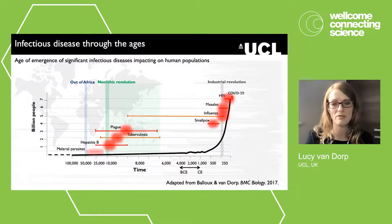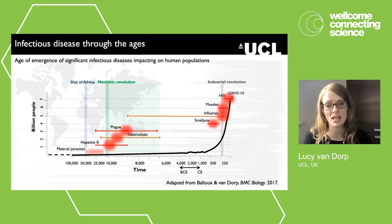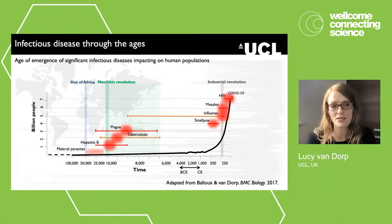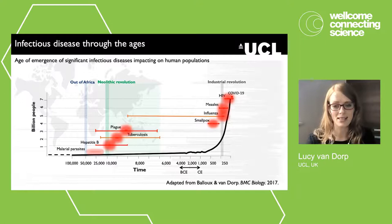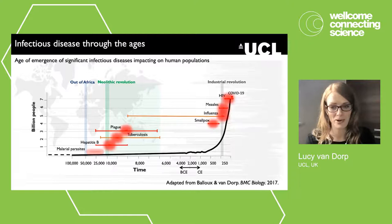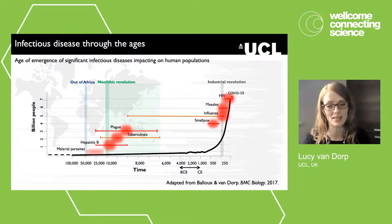One solution is to generate pathogen genomes from the past, making use of diverse sources of ancient biomolecules — ranging from archaeological remains through to pathology collections or museum samples. At the same time, our understanding of current disease outbreaks and pandemics is increasingly moving to essentially real time, allowing us to track the evolution of new pathogens with very rich epidemiological data. Both past and present approaches to pathogen genomics are opening up new opportunities.